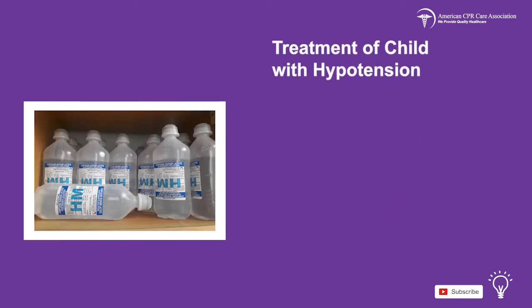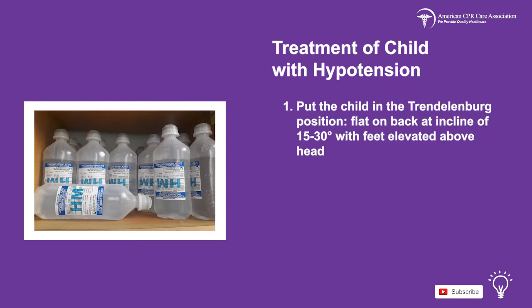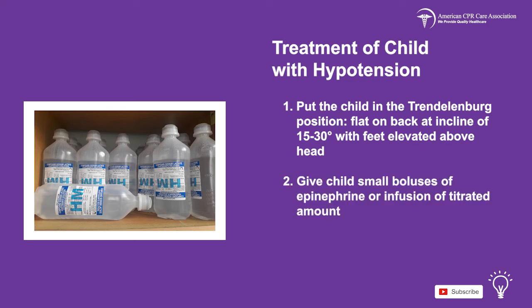If the child is hypotensive, do the following three things: First, put the child in the Trendelenburg position — flat on their back at an incline of 15–30 degrees with the feet elevated above the head. Second, give the child small boluses of epinephrine or an infusion of the titrated amount. Third, administer isotonic crystalloid.